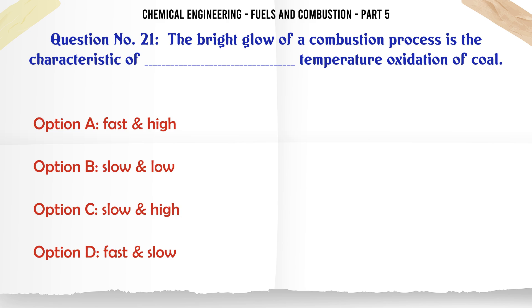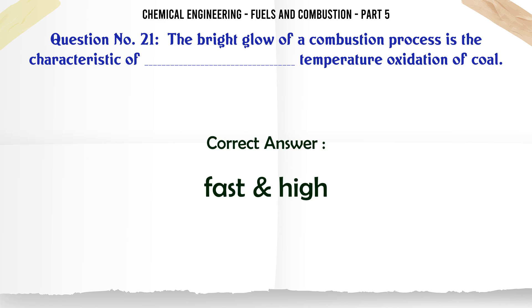The bright glow of a combustion process is the characteristic of __ temperature oxidation of coal: A. Fast, high. B. Slow, low. C. Slow, high. D. Fast, slow. The correct answer is fast, high.